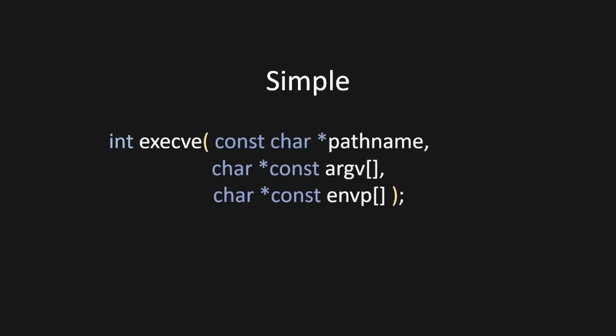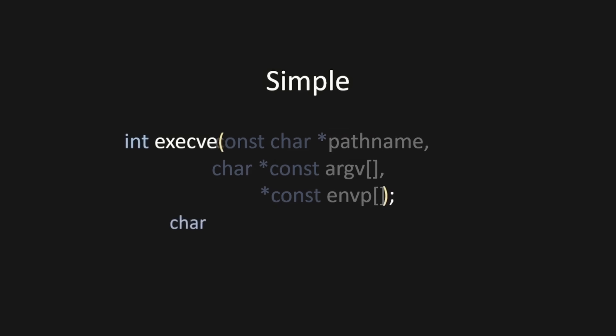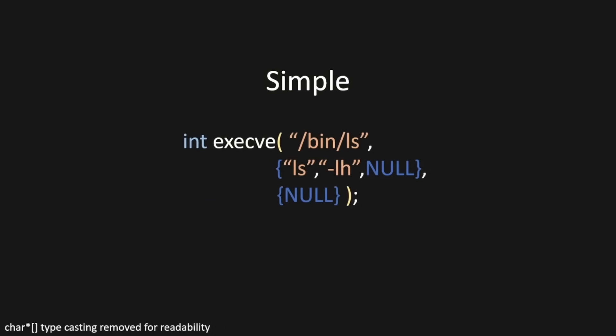If we look at the function signature of execve, we can see that it takes a pathname; argv, which is a null-terminated character array that consists of the arguments we want to pass to the executable; and envp, which is a null-terminated character array that we're going to pass as the environment variables accessible to the executable. To fill these in with some realistic values — say we wanted to run ls and pass in the parameter -lh — we don't actually care about passing any environment variables in this case.